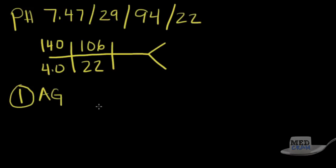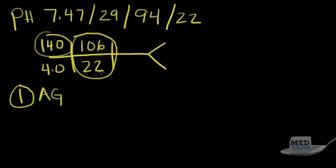The reason this is the first step is because if you have an anion gap, then you always have an anion gap metabolic acidosis. The anion gap is 140 minus the sum of chloride and bicarb: 106 plus 22 is 128, so 140 minus 128 equals 12. We'll assume everyone has a normal albumin — normal albumin is 4, so 3 times 4 is 12, meaning the normal anion gap is 12.